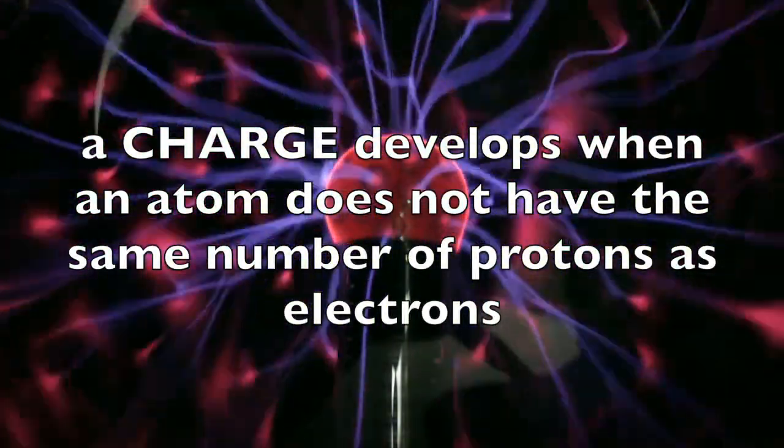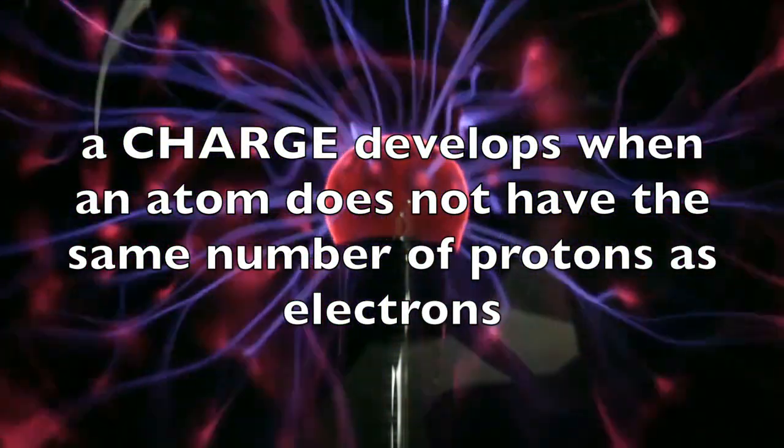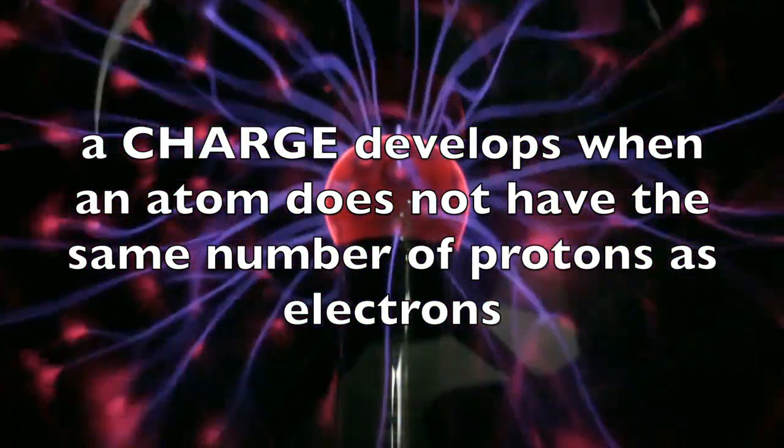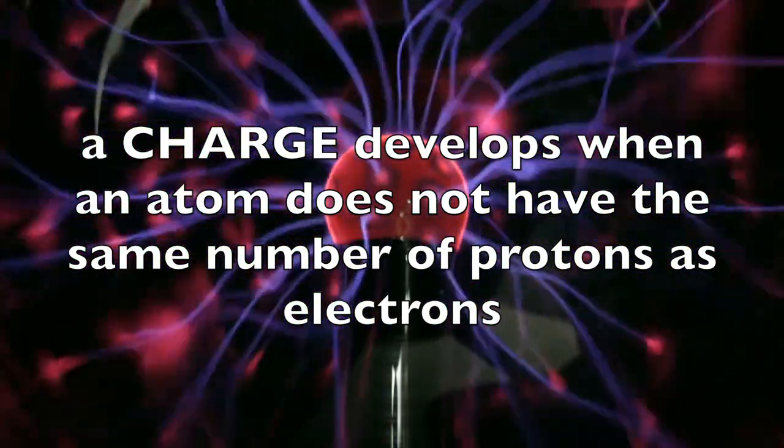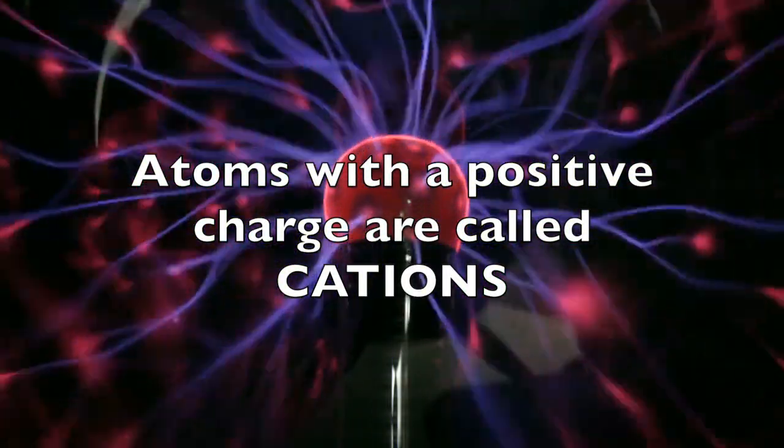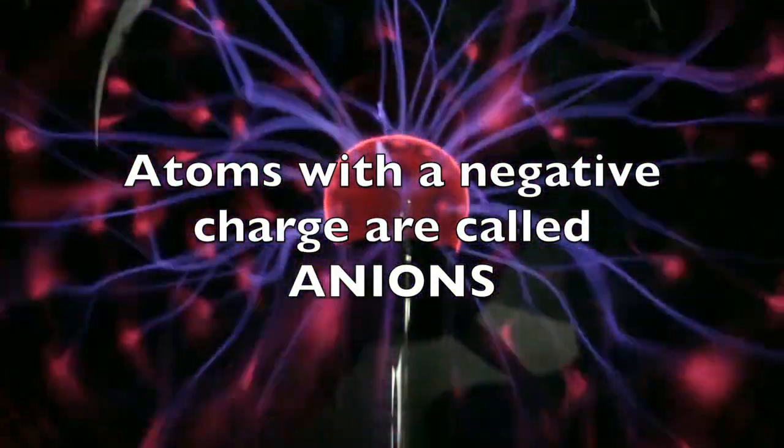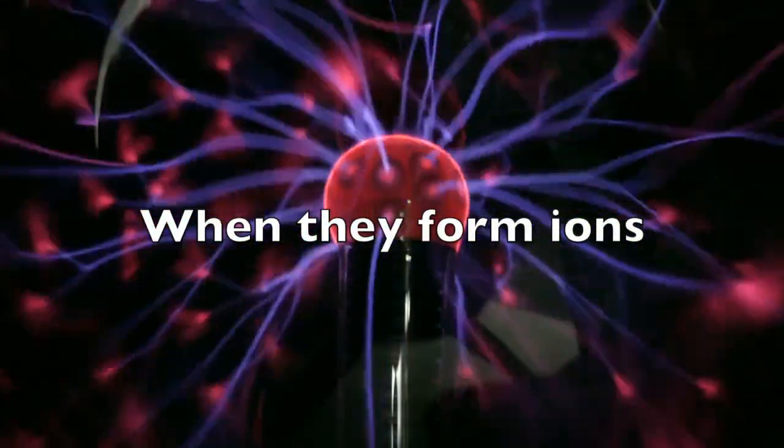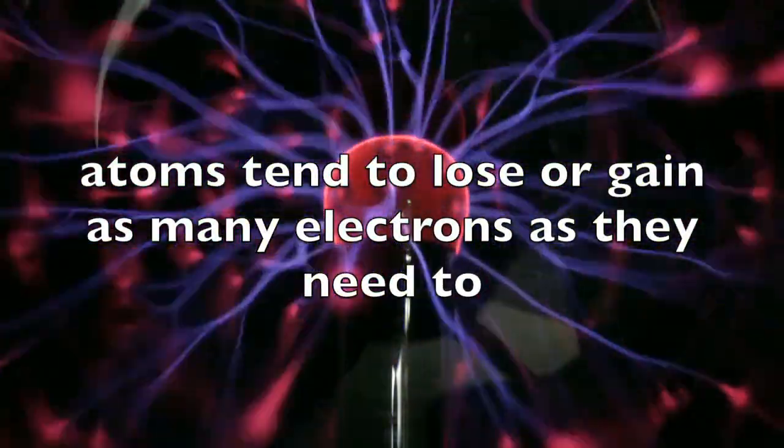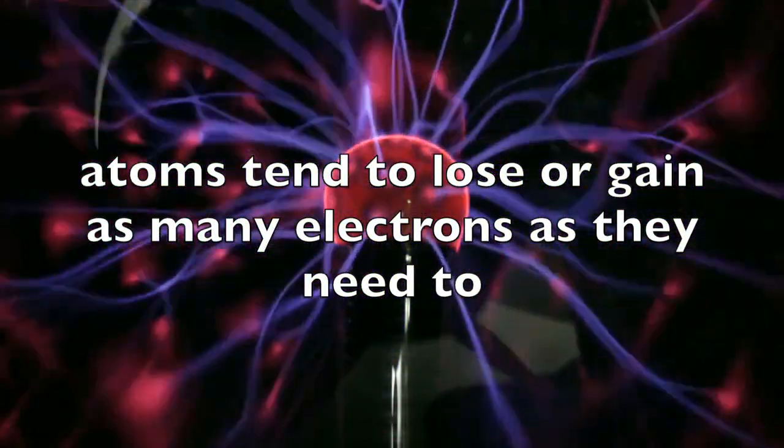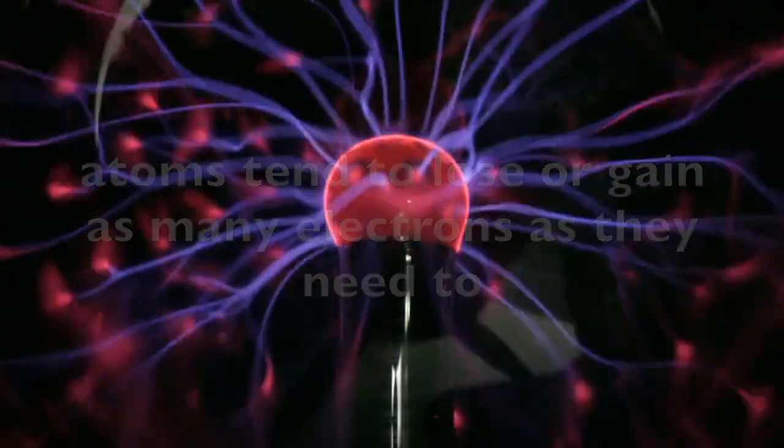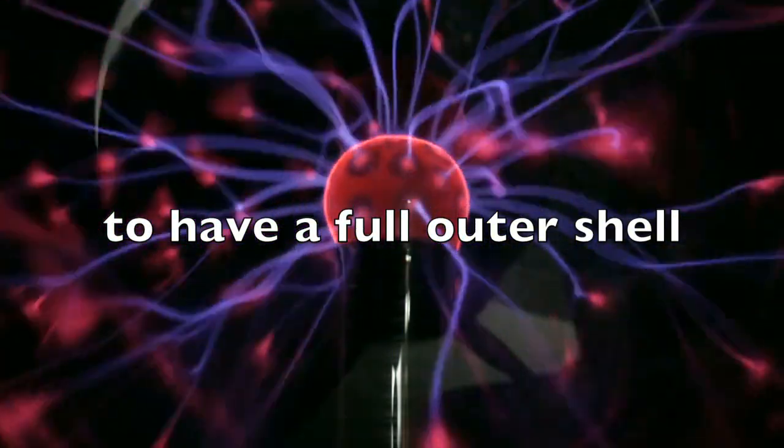A charge develops when an atom does not have the same number of protons as it does electrons. Atoms with a positive charge are called cations. Atoms with a negative charge are called anions. When they form ions, atoms tend to lose or gain as many electrons as they need to have a full outer shell.